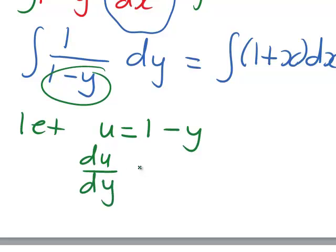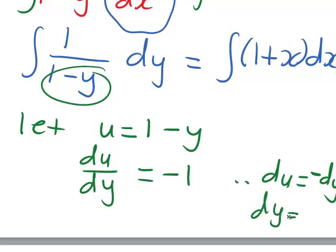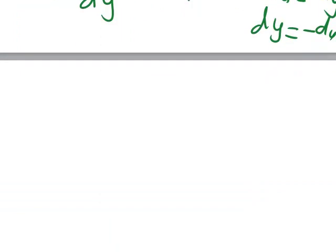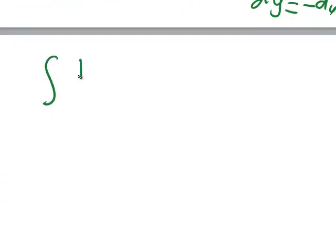Differentiating that, we get du/dy equals negative 1, meaning that du equals negative dy. We then need to replace our expression with u and du. When we rewrite the left-hand side, it is now the integral of 1 divided by u times negative du.